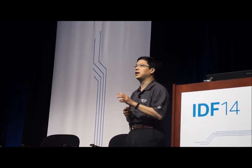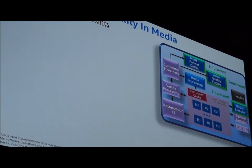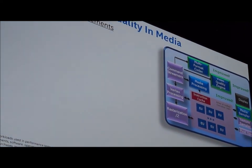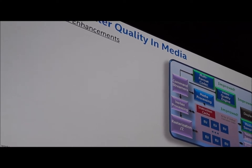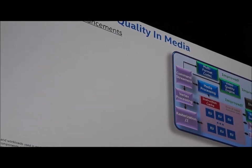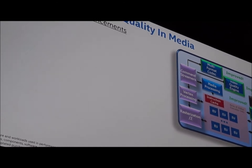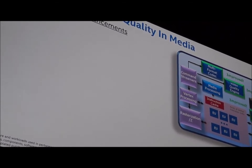Three key fixed-function additions complement the GPU compute for media: the media sampler — a fixed function accessible by the programmable engine, significantly less expensive than traditional GPU computing; the video quality engine — a standalone fixed function for video processing tasks like noise reduction and color enhancement; and the multi-format codec — a video decoder designed to run in parallel with the render engine.